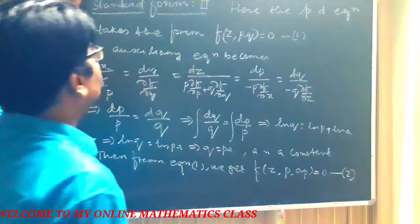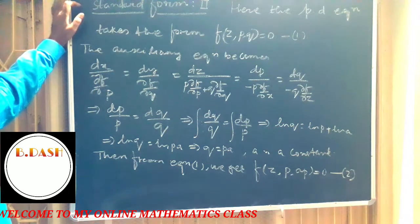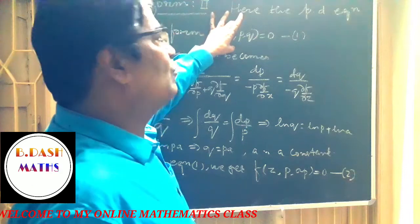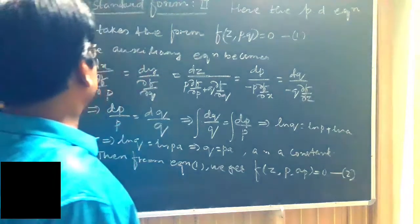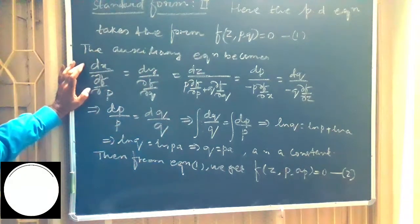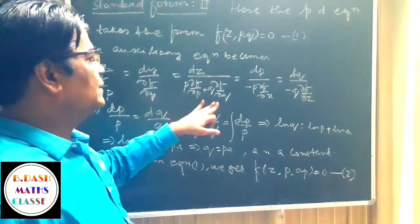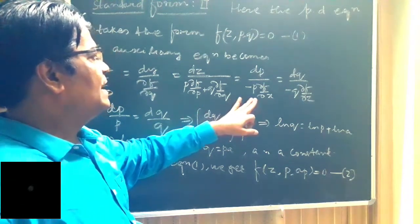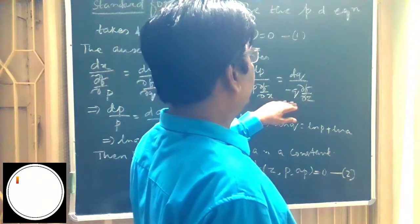Here you see standard form 2. The partial differential equation takes the form f(z, p, q) = 0. Let us take this as equation 1. The general auxiliary equations become: dx/(∂F/∂p) = dy/(∂F/∂q) = dz/(p·∂F/∂p + q·∂F/∂q) = dp/(−p·∂F/∂z) = dq/(−q·∂F/∂z).